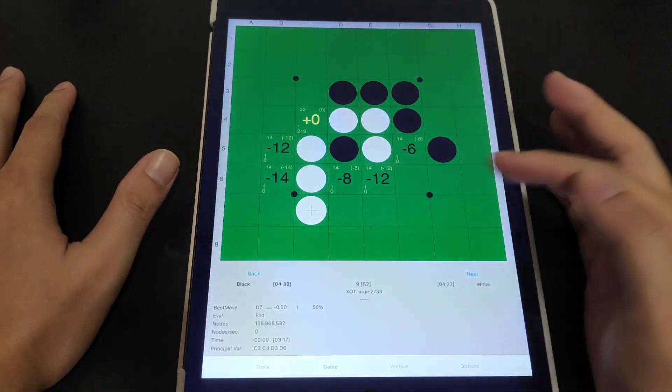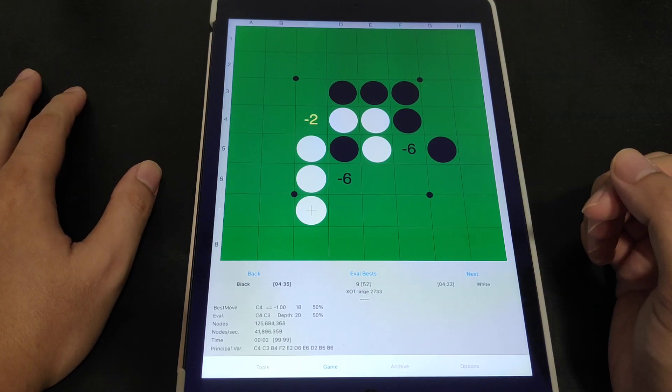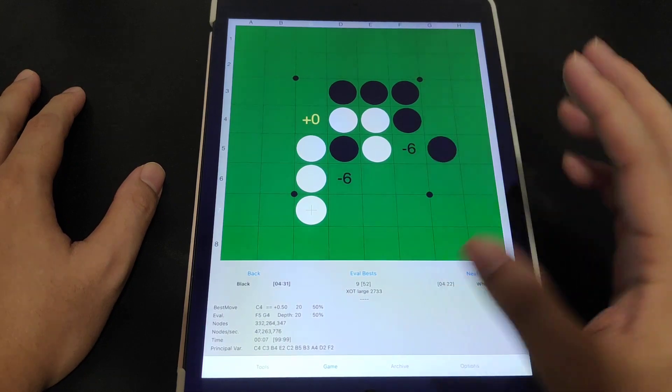If you click on game mode or you can toggle to library, they'll tell you which one is the best move. You can also evaluate it. So it's within the plus minus two range.